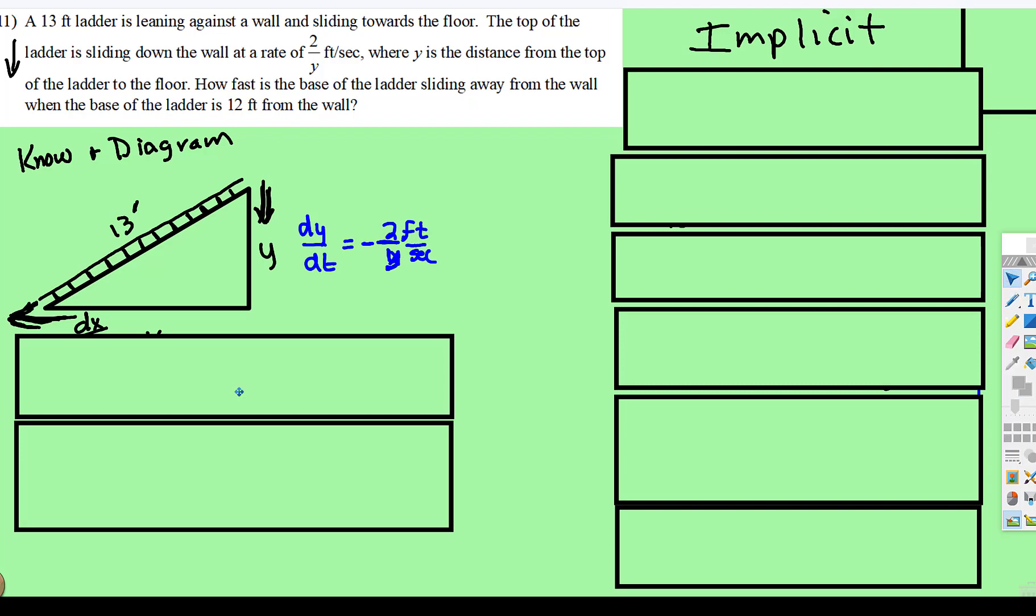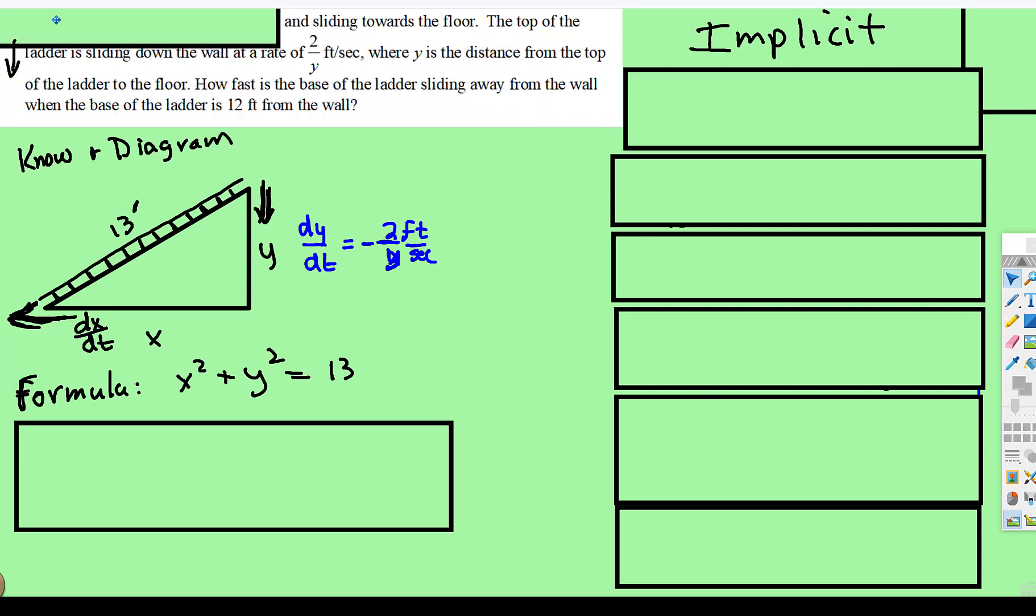Alright, so our know and our diagram are kind of put there together. They give us this rate right here, and because it's going down, that distance is shrinking, that's a negative rate. So negative 2 over y feet per second. This distance is x, the height is y.